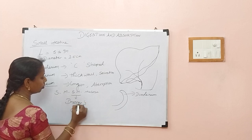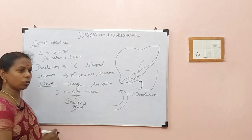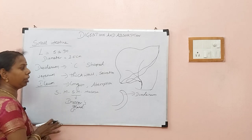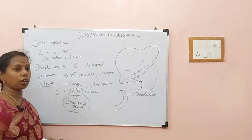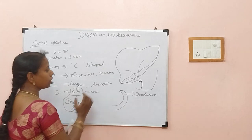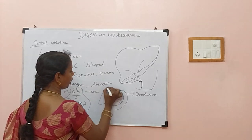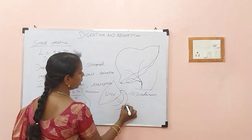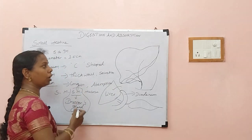Brunner's glands also secrete mucus, similar to goblet cells, but additionally they secrete mucus here as well. The location of Brunner's glands is a possible exam question — remember, they are in the submucosa of the duodenum. On one side of the duodenum, we find the triangular structure called the liver, and beneath it, we find the pancreas. So, let us first learn about the liver.